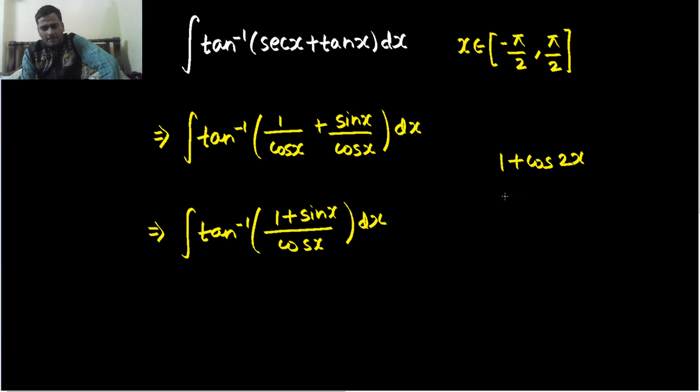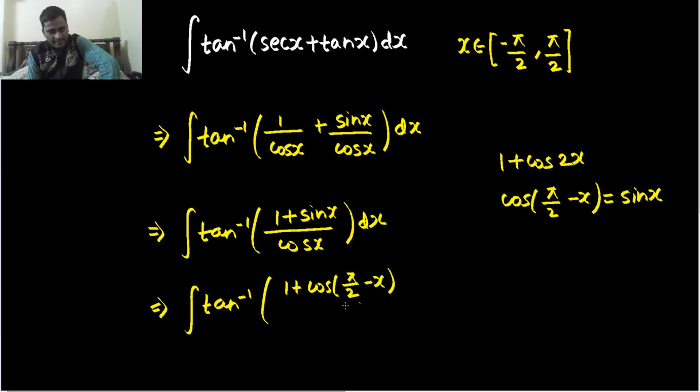Yes, we can because cos if we write cos π/2 minus x that is same as sin x. In that case, let's see what numerator looks like. So tan inverse 1 plus cos of π/2 minus x because cos π/2 minus x is sin x. Now in this case, we are getting 1 plus cos something like 1 plus cos x.